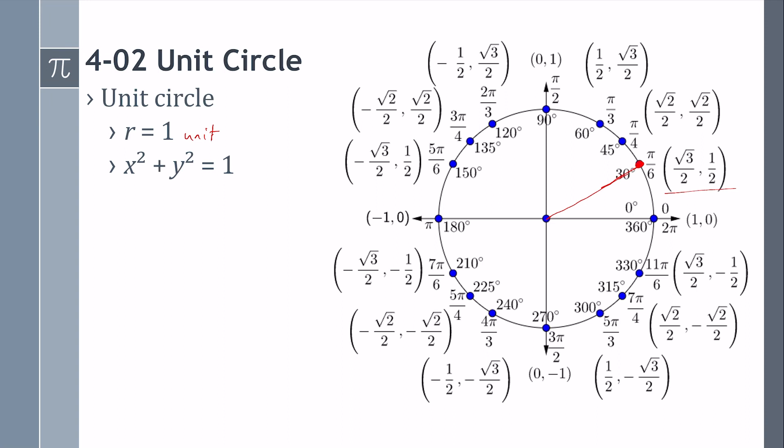The circle is nice and symmetric. Most students do pretty well with the degrees. Notice the radians: it's 6, 4, 3, 2 as you're counting away from the x-axis. The first quadrant is just pi on top. In the second quadrant, the numerator is 1 less than the denominator. In quadrant 3, the numerator is 1 more than the denominator. And in quadrant 4, the numerator is 1 less than twice the denominator.